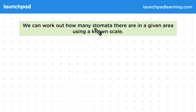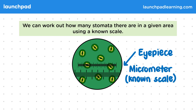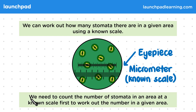We can work out how many stomata there are in a given area using a known scale. This diagram represents the view through the eyepiece of a microscope. On the eyepiece is a micrometer of a known scale. We need to count the number of stomata in an area at a known scale first to work out the number in a given area. So how can we calculate the number of stomata in a given area?